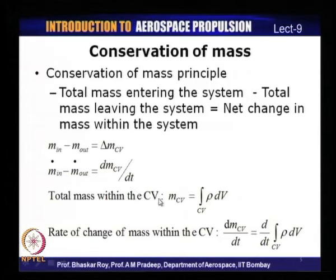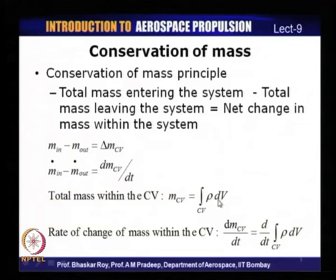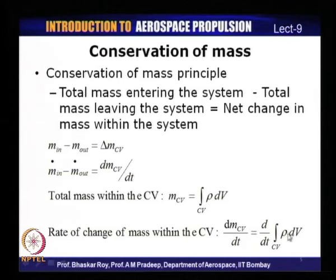Therefore, you can calculate the total mass within the control volume M_CV as the integral of rho times dV. In the rate form, the rate of change of mass within the control volume is dM_CV/dt, which is d/dt of the integral of rho dV. The conservation of mass states that any change in the mass of the system is attributed to the mass coming in and the mass going out.